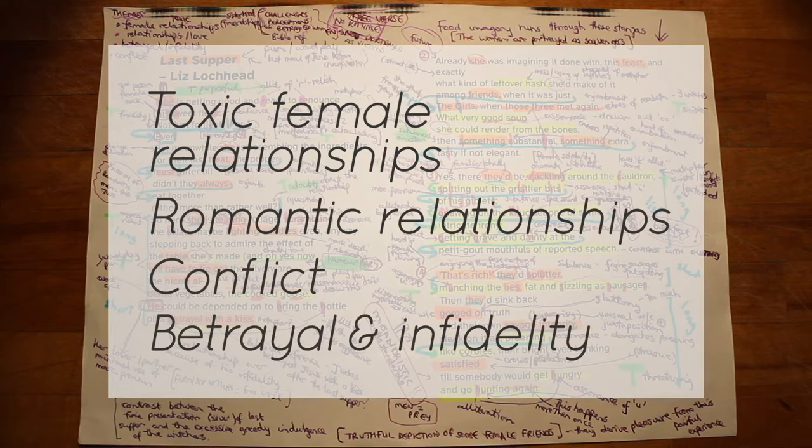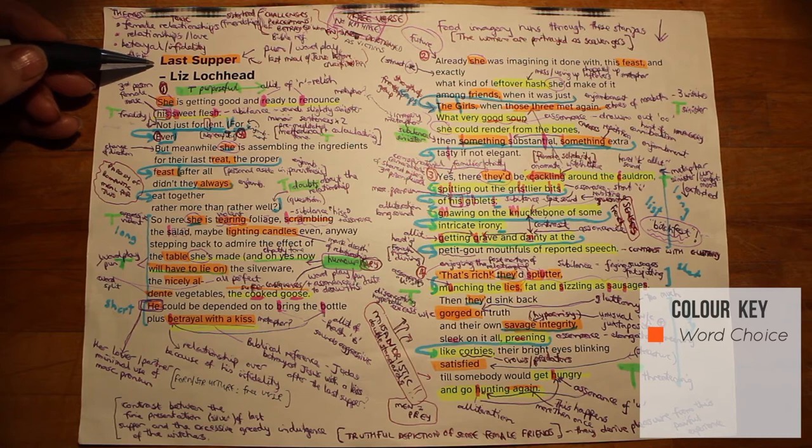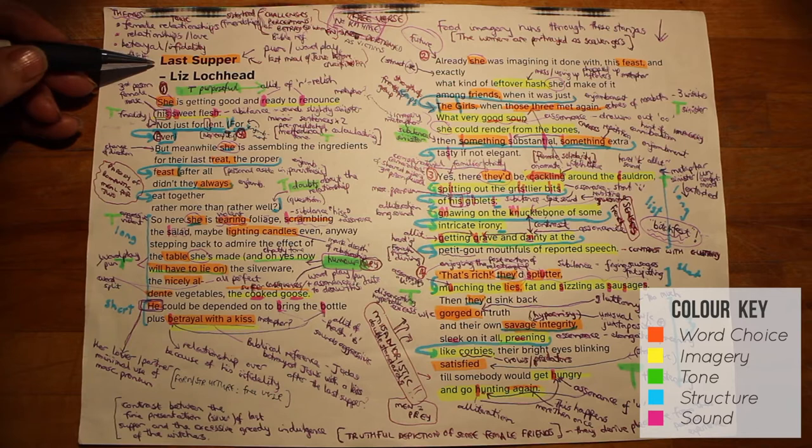The title of the poem Last Supper is interesting. It refers to a biblical event, the final meal that Jesus took with his disciples before the crucifixion. One of the disciples, Judas, betrays Jesus. And this links neatly to the fact that the persona in the poem is preparing a meal for a partner who appears to have betrayed her.